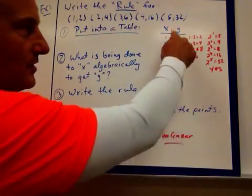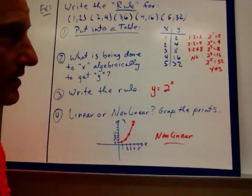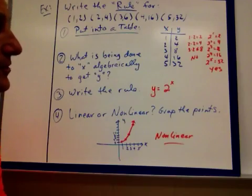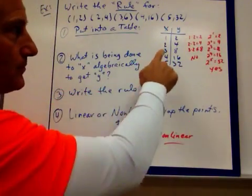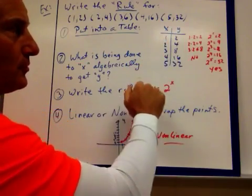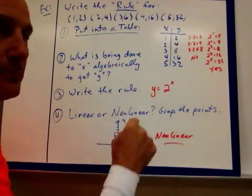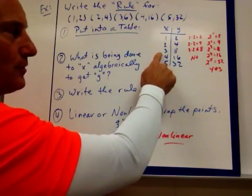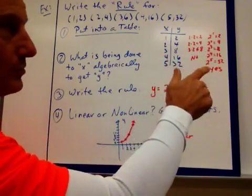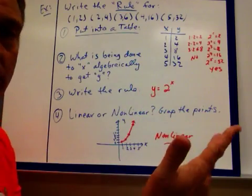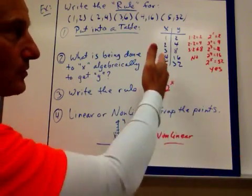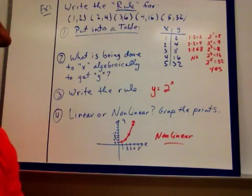So I start seeing something here, which you may not see at first, but as you go along you'll see some things. I start putting my x as the exponent. 2 to the first power is 2. 2 to the second power, 2 times 2, is 4. 2 to the third power, 2 times 2 times 2 is 8. 2 to the fourth power, 2 times 2 is 4, times 2 is 8, times 2 is 16. It works.